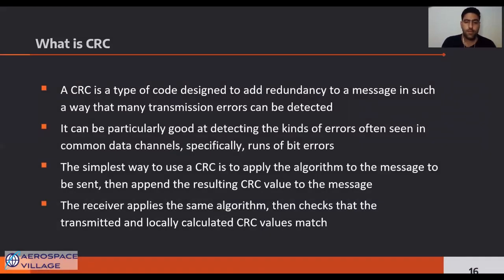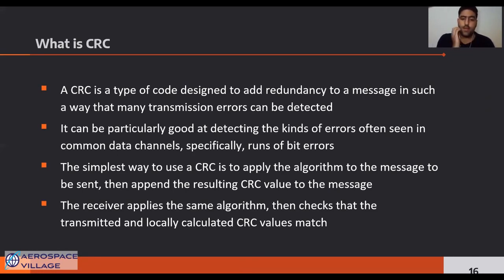CRC, or cyclic redundancy check, is an error detection code. It finds changes in data as it travels from one computer to another by adding a code to the end of the data stream. The sending computer creates the code and the receiving computer checks it. If the code checks out, the data is accurate; if the codes don't check out, the data is corrupted.